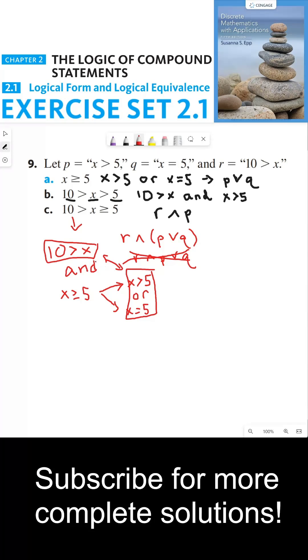...because the and doesn't apply between the 10 is greater than x and the x is greater than 5, but between the 10 is greater than x and this entire statement: x is greater than 5 or x equals 5. And so that's why I put parentheses around that.